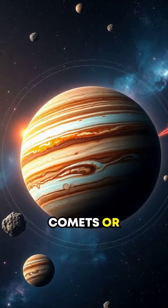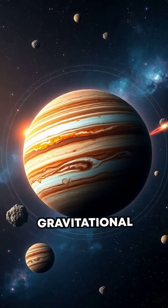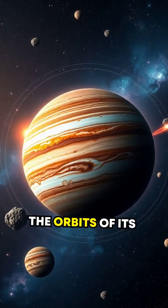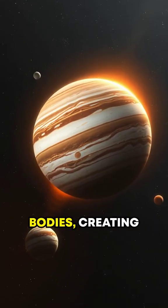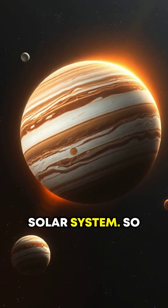And it's not just comets or asteroids. Jupiter's gravitational influence even helps stabilize the orbits of its moons and other celestial bodies, creating a safer, more predictable solar system.